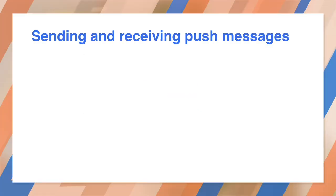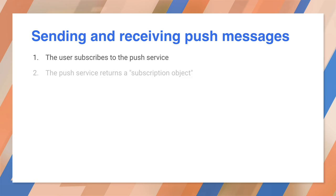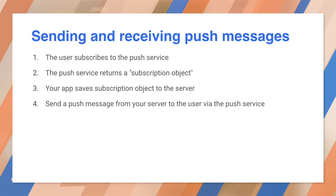Let's see how to send push messages from your server and handle incoming messages on your client web app. Each browser manages push notifications through its own system called a push service. When a user grants permission for push on your site, you subscribe them to the browser's push service. This creates a subscription object that includes a public key to enable messages to be encrypted and an endpoint URL for the browser's push service, which is unique for each user. From your server, you send push messages to this URL encrypted with the public key, and the push service forwards the message to the right client device and browser.